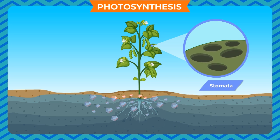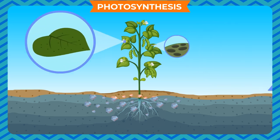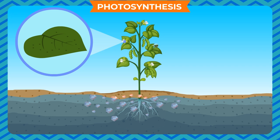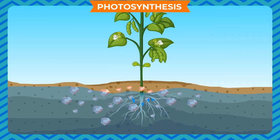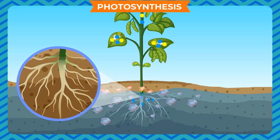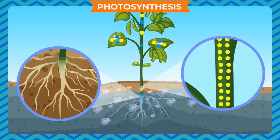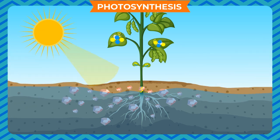Chlorophyll traps energy from sunlight. Air enters through tiny pores called stomata, which are located on the surface of the leaves and surrounded by guard cells. Since the synthesis of food occurs in leaves, all raw materials must reach there. Plants take carbon dioxide from the surrounding air through stomata. Water and minerals present in the soil are absorbed by the roots and transported to the leaves.